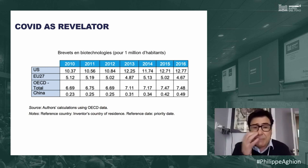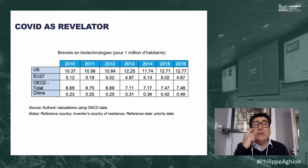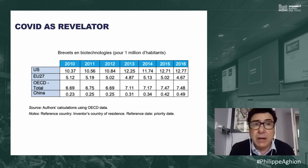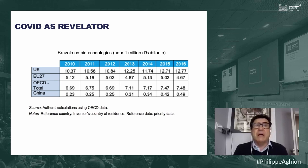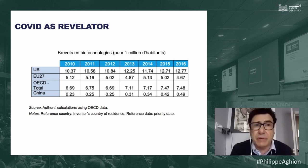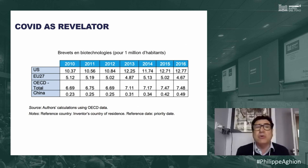Going from basic to private sector research and development, you create startups. For startups, venture capital, business angels, and private equity are key financial instruments — and venture capital is much more developed in the US than in Europe. When the firm grows and goes public, institutional investors such as mutual funds and pension funds play a big role — also much more developed in the US.